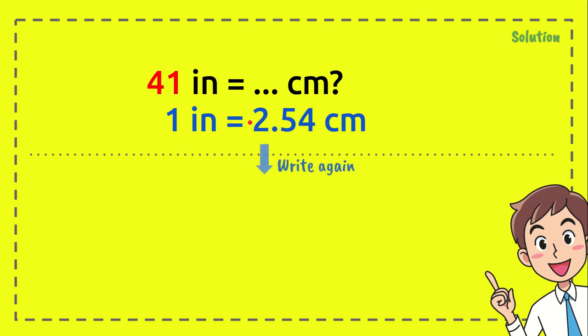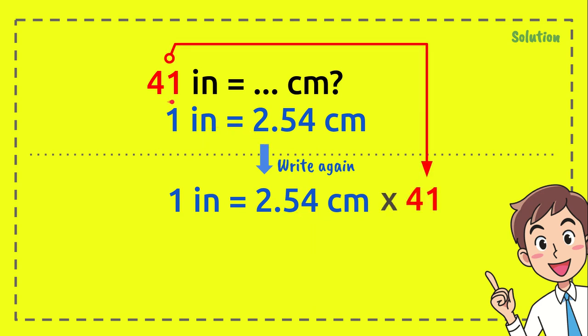Okay, this is the very important step. Just write the formula again and put it right here. After that, you multiply 2.54 centimeters with the number from the question, which is 41. And then we multiply 1 inch with 41 as well.